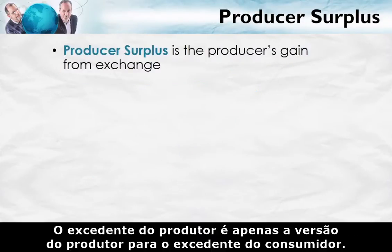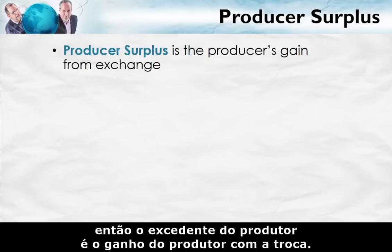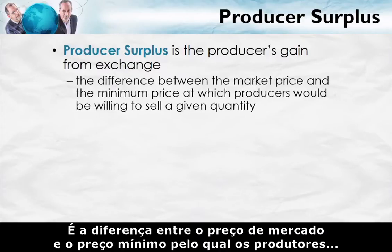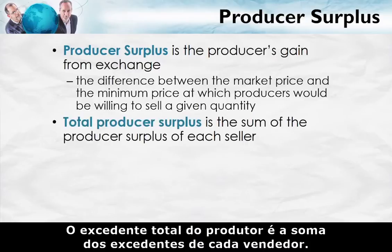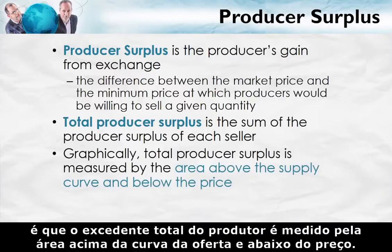Producer surplus is just the producer's version of consumer surplus. Consumer surplus is the consumer's gain from exchange, so producer surplus is the producer's gain from exchange. It's the difference between the market price and the minimum price at which producers would be willing to sell a given quantity. Total producer surplus is the sum of the producer surplus of each seller, and graphically, total producer surplus is measured by the area above the supply curve and below the price.